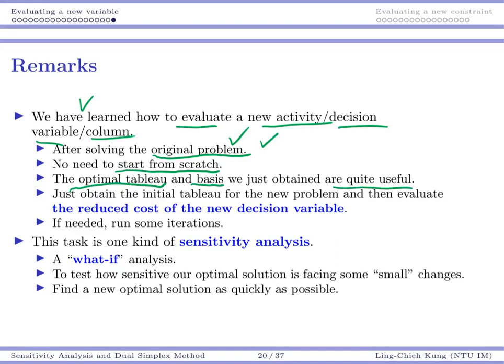All you need to do is take a look at your new decision variable and check its reduced cost. This can be done easily if you are using the right formula, if you are having some ideas of capital B, capital N, c_B transpose in mind. And if needed, run some iterations to get to an optimal solution.